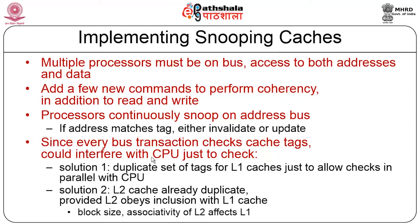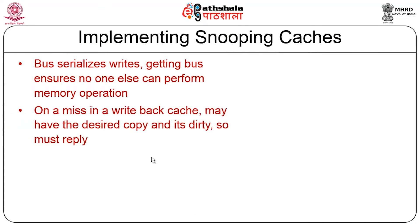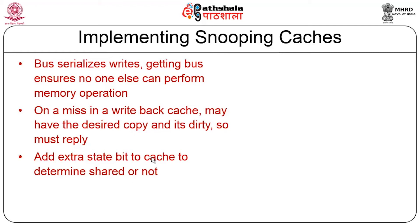Two solutions exist to avoid CPU interference. First, duplicate the set of tags so the processor uses one set and the bus uses another; updates are applied when changes occur. Second, look at an inclusive cache, though this affects block size and associativity. For implementation, the bus serializes writes — getting the bus ensures no one else can perform the memory operation. On a miss in a write-back cache, the caching processor may have the desired copy dirty and must reply. An extra state bit must be added to the cache to determine shared or not, in addition to the valid bit and dirty bit.